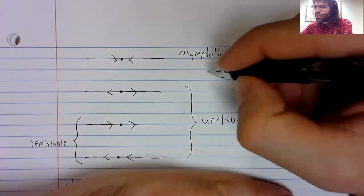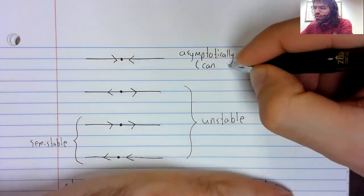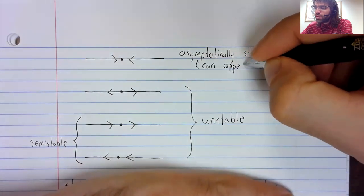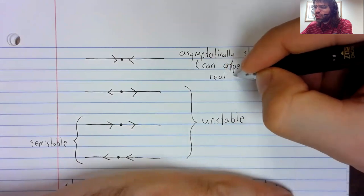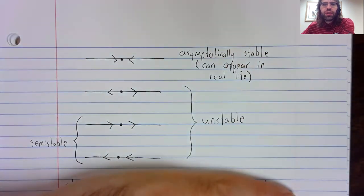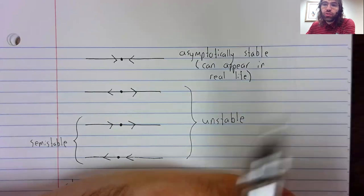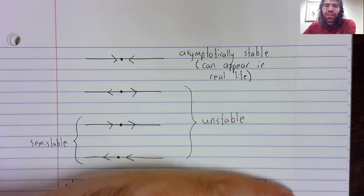Asymptotic stability is what you usually need for a fixed point to show up in real life. And again, this is going back to the idea that you might not have randomness in your differential equation, but basically, any real world situation is going to have elements of randomness.